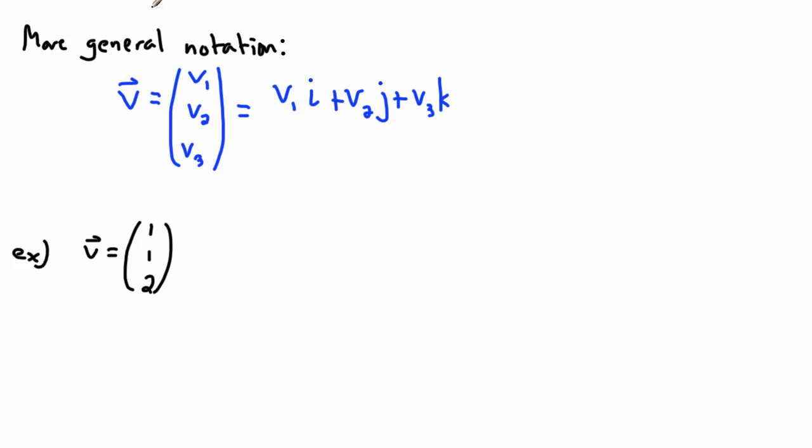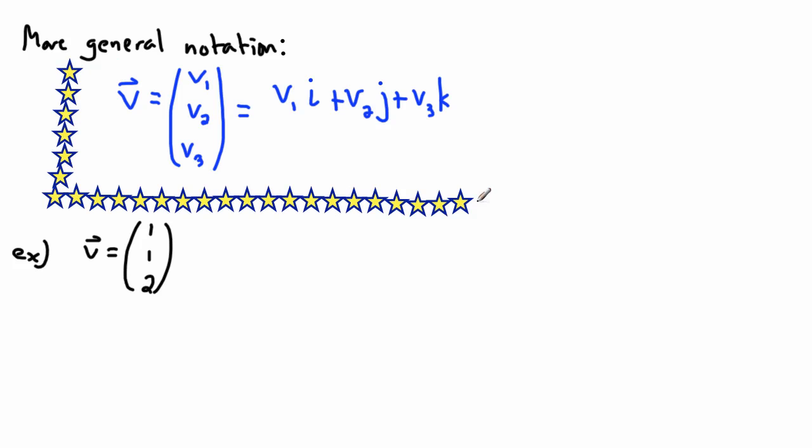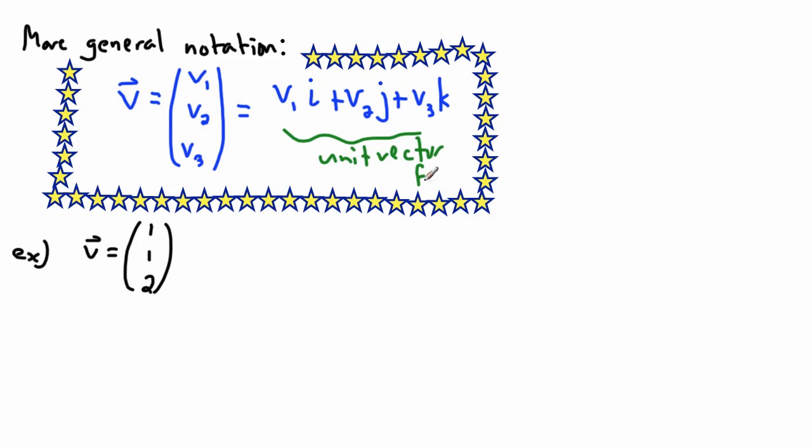You can also write it as v1 times i plus v2 times j plus v3 times k. This is also the same thing. This is a generic form for a vector. We can write it in lots of different ways. So we can call it this right here, which is in unit vector form, or we can write it in component form. Either way, it's still okay. They're equivalent. So basically write it whatever way you feel like.